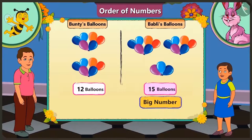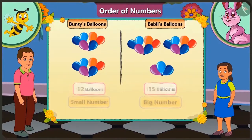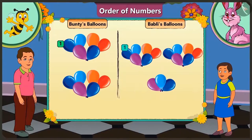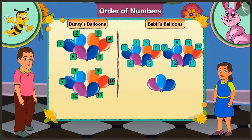15 is a bigger number and 12 is a smaller number compared to it. Now tell me which number comes first in the order of counting — is it number 12 or number 15? While counting, 12 comes first, then comes 13, 14, 15. Now tell me, how many more balloons does Bubbly have? Here is one balloon of Bunty's, here one of Bubbly's. Both of them have 1 through 12 balloons matched up. Bunty has 12 balloons and Bubbly too has 12 balloons paired.